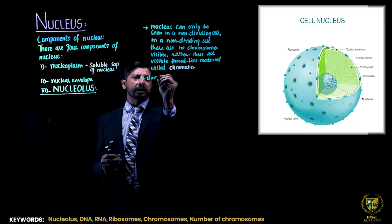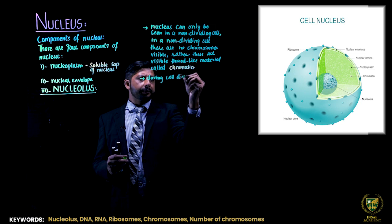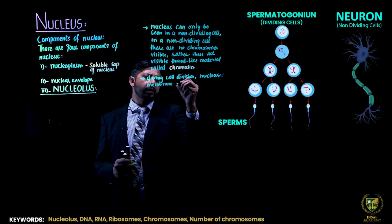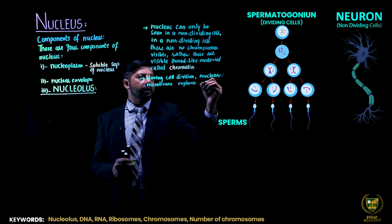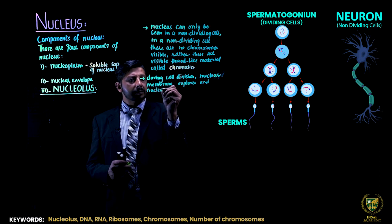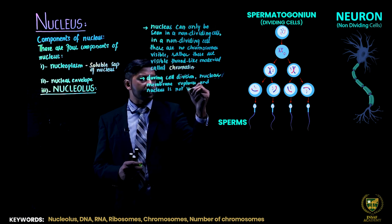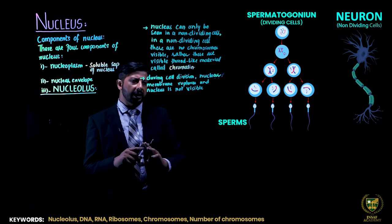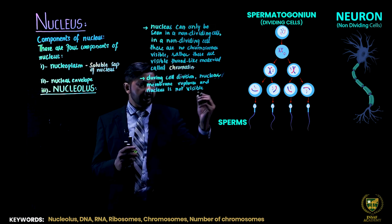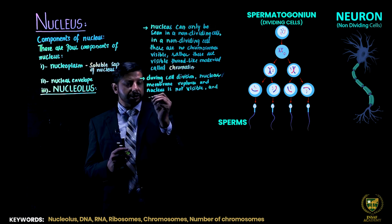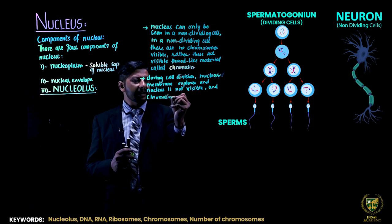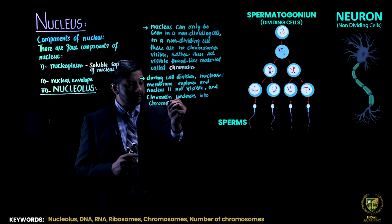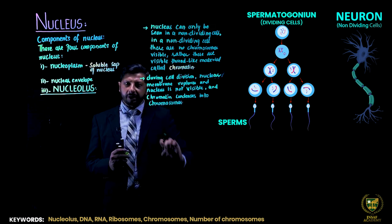During cell division, the nuclear membrane ruptures and the nucleus is not visible. When cell division starts — during prophase — the nuclear membranes are disrupted and disorganized, so the nucleus will not be seen. The chromatin, the thread-like material, condenses into chromosomes.